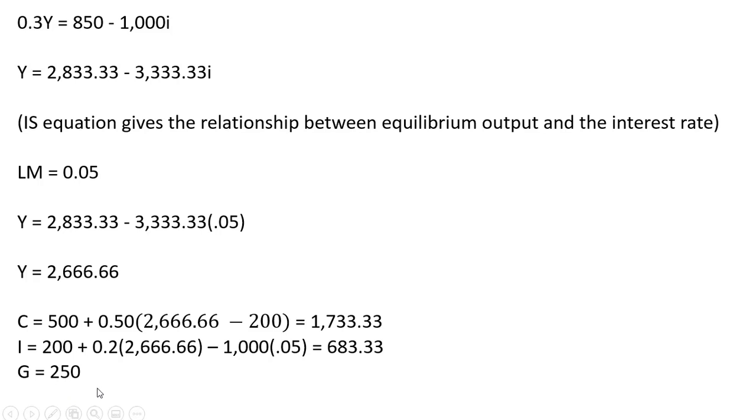Government purchases is autonomous at 250. And if we add up all three of these values, we back into our real output. Okay, that's it. I hope you found this video helpful.